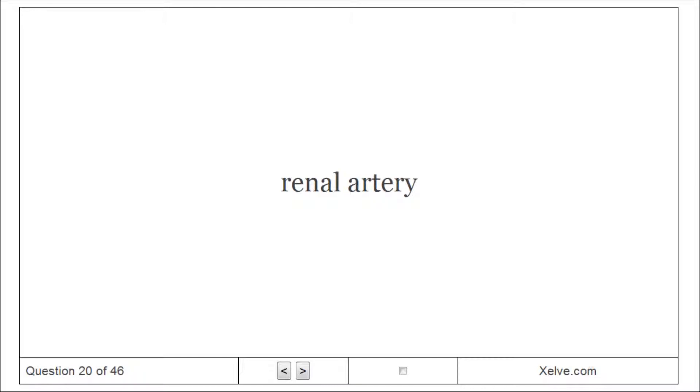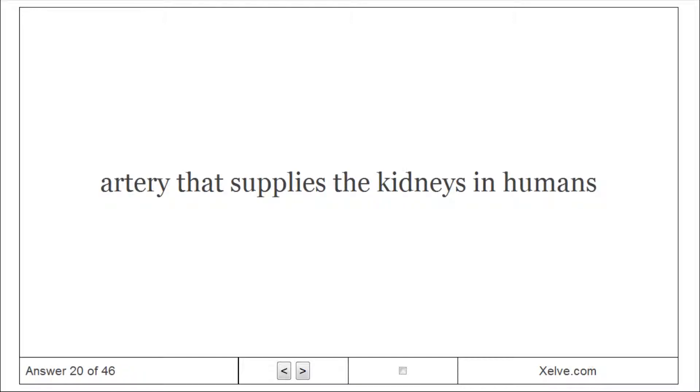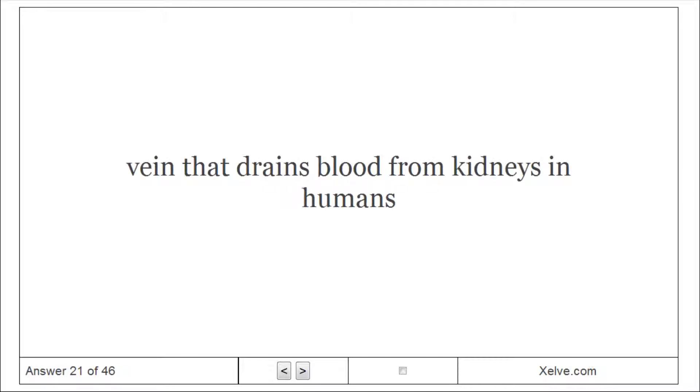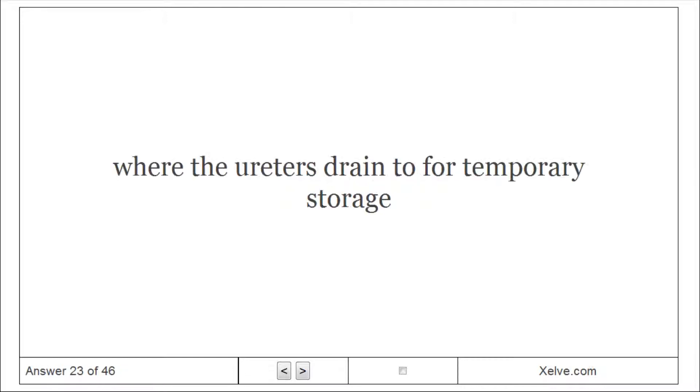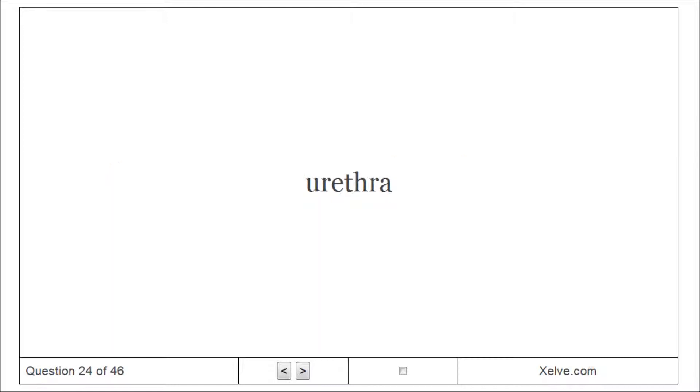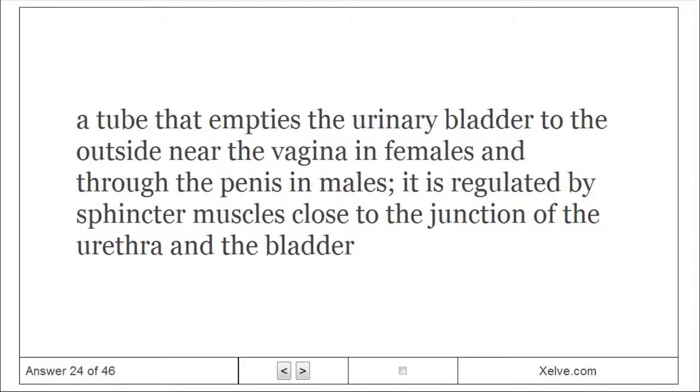Renal artery: Artery that supplies the kidneys in humans. Renal vein: Vein that drains blood from kidneys in humans. Ureter: A duct where urine exits each kidney. Urinary bladder: Where the ureter is drained for temporary storage. Urethra: A tube that empties the urinary bladder to the outside near the vagina in females and through the penis in males. It is regulated by sphincter muscles close to the junction of the urethra and the bladder.